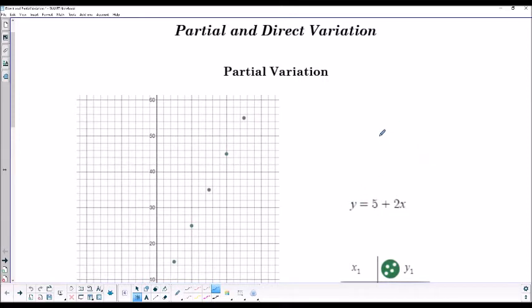Partial variation basically is saying that the value of y partially varies due to a constant value added to a multiple. So it partially varies from the constant and partially varies from the multiple part. So there's two things to it.